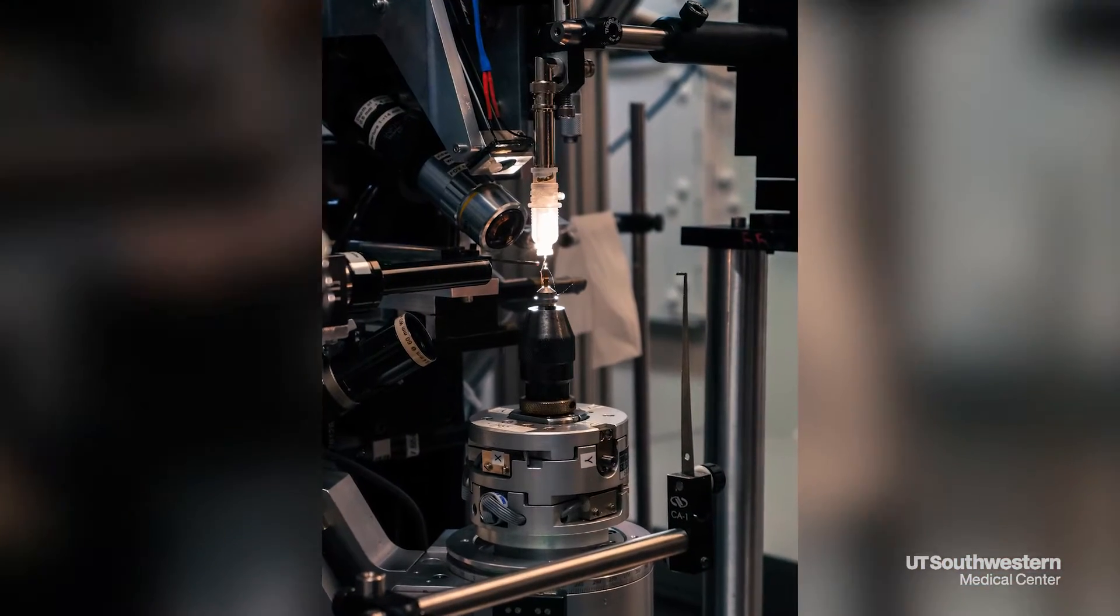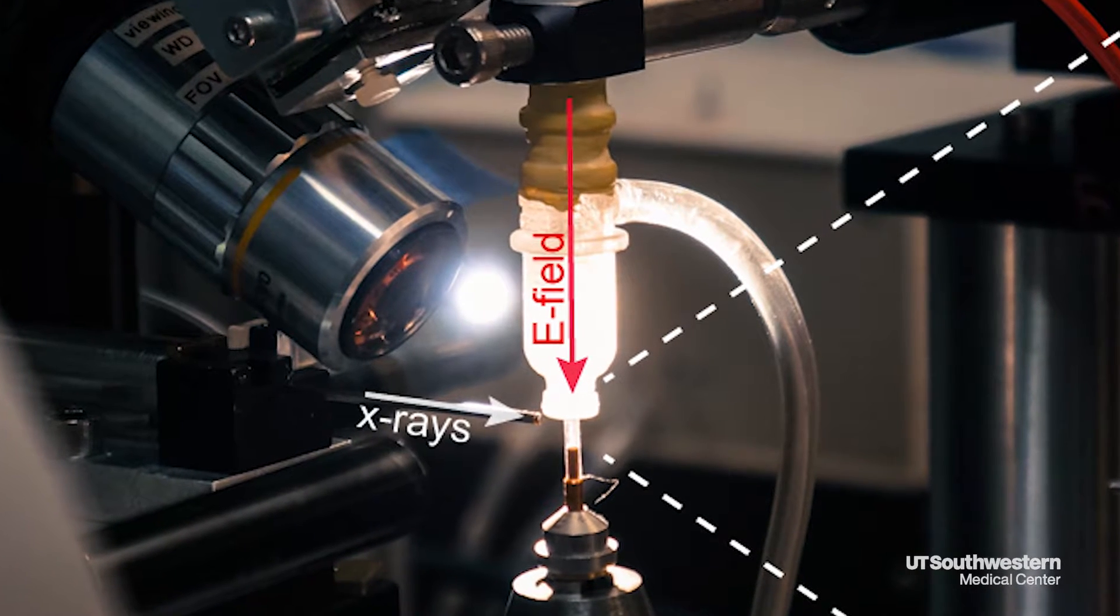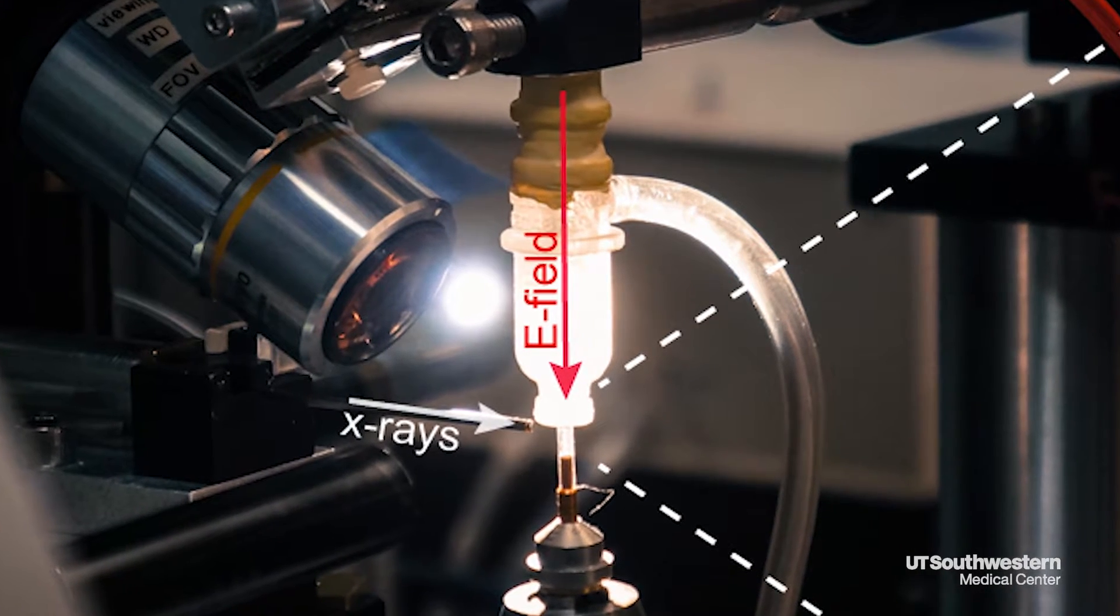The simple idea we had is to subject proteins to a very large electric field, large enough that we can stimulate a lot of the motions, and then we see the protein structure by the usual approach we use to see structures, which is a method called X-ray diffraction.